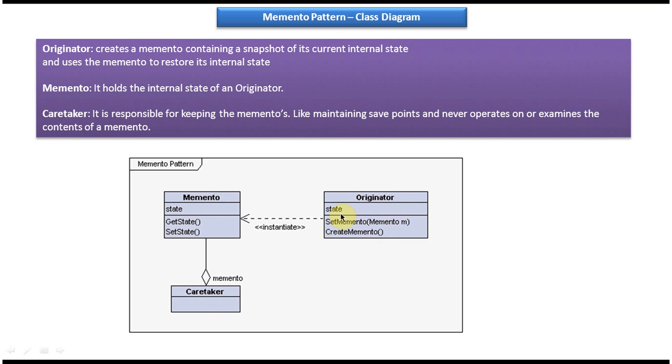And here you can see state in Originator. Also you can see state in Memento class. And this Originator has two methods: one is CreateMemento and another one is SetMemento, and SetMemento accepts a Memento object.